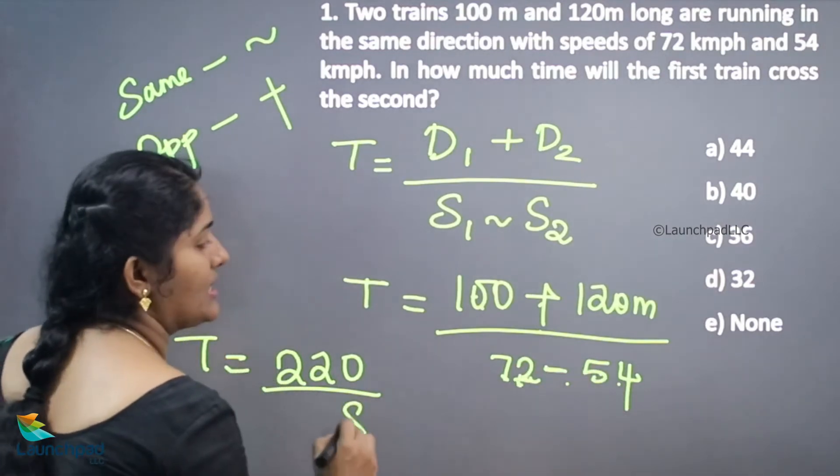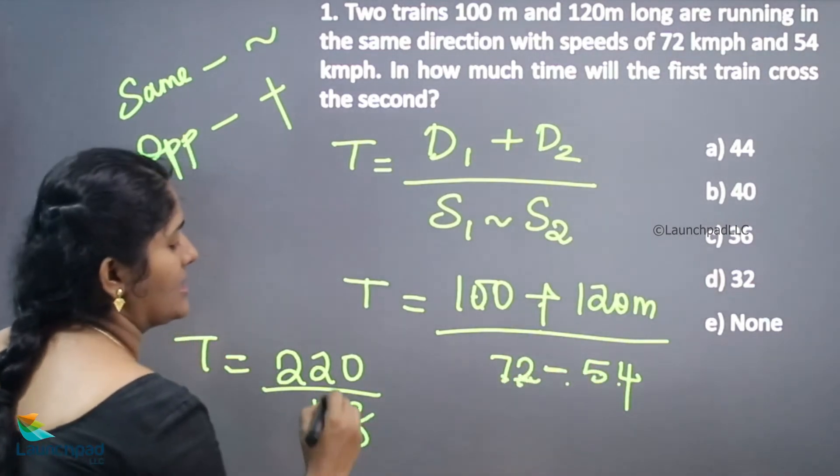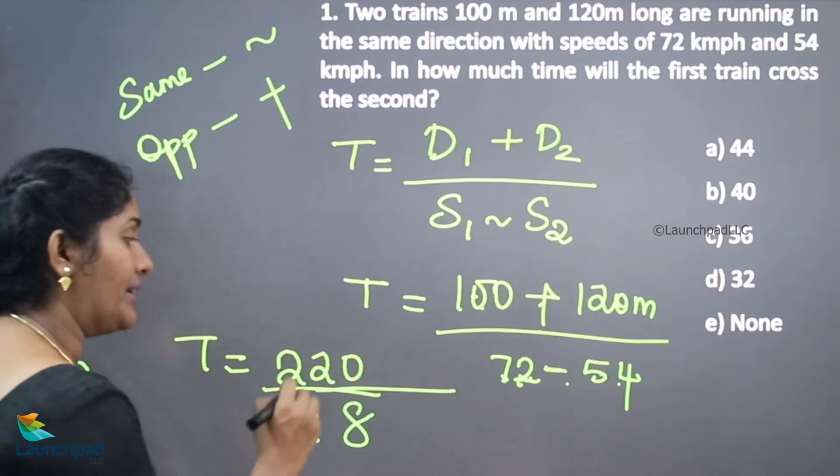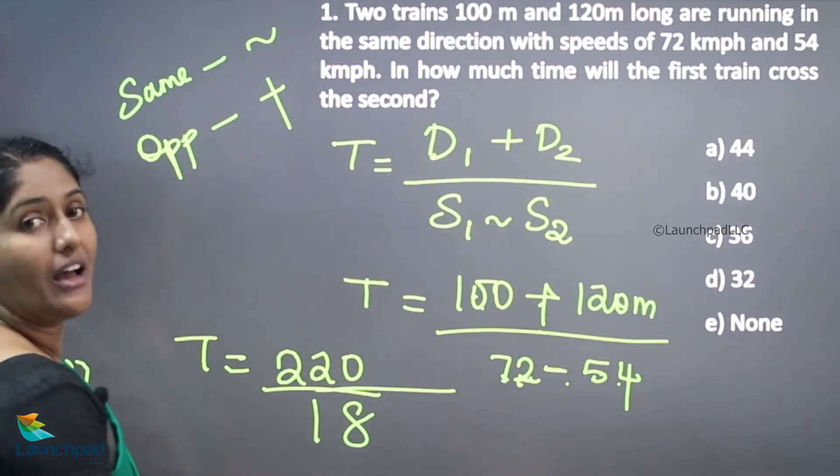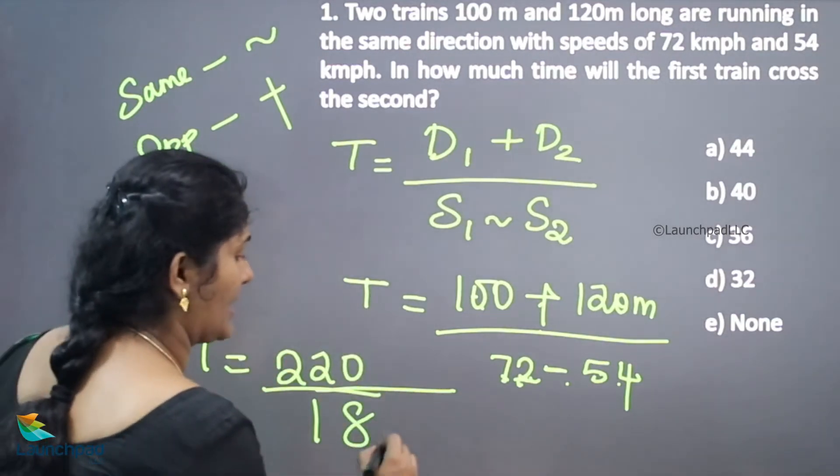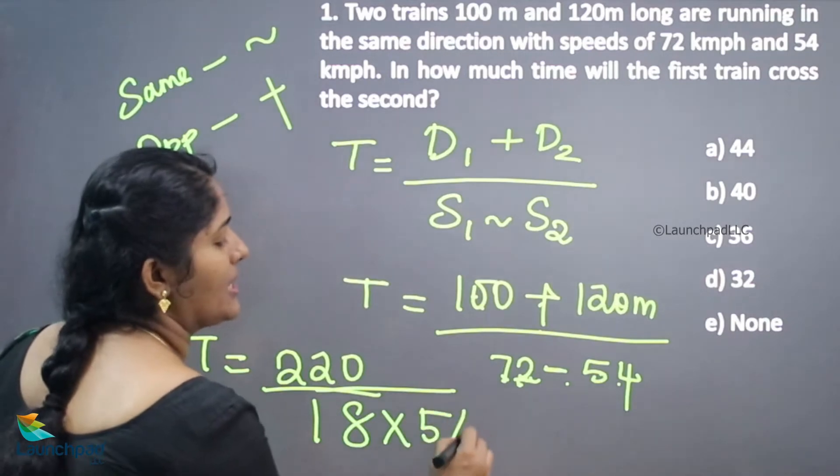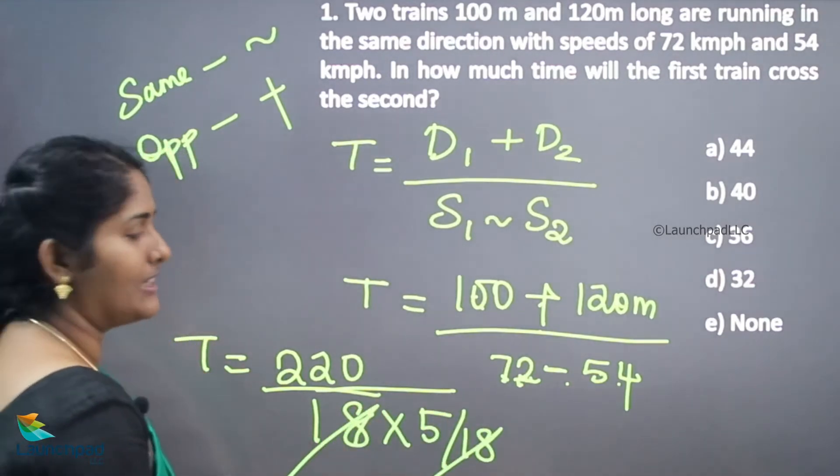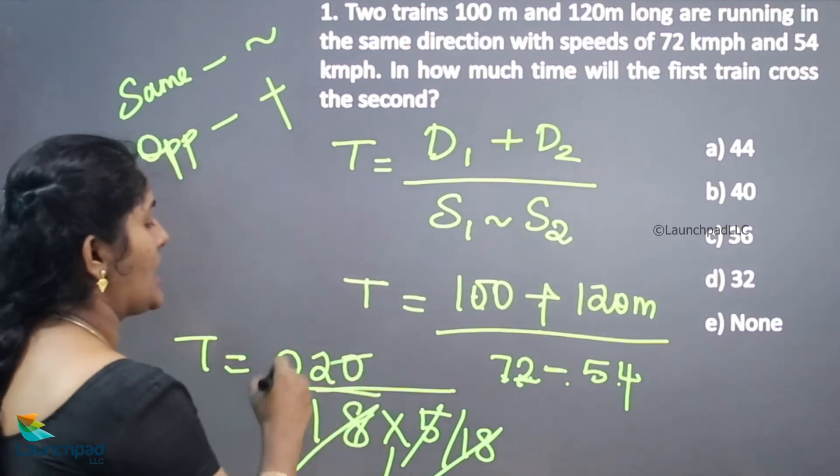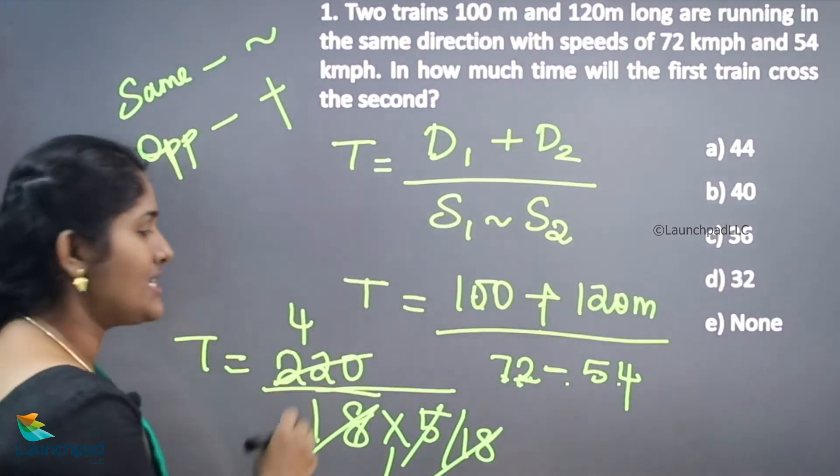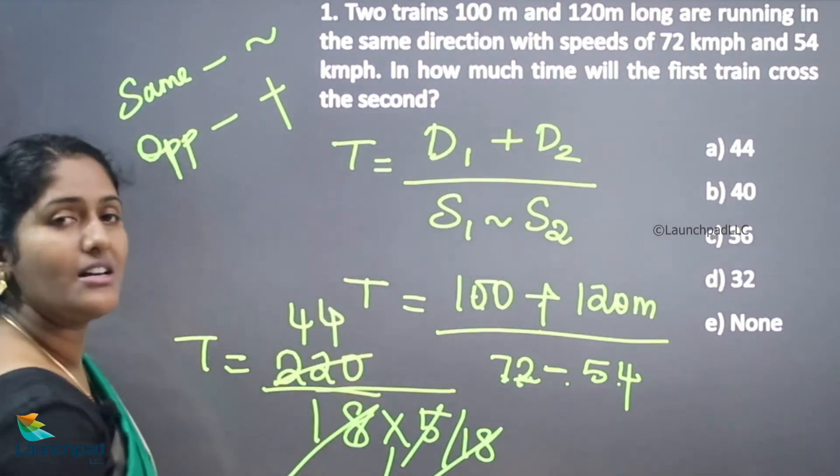12 minus 4 is 8, 6 minus 5 is 18. We need to convert this 18 kilometer per hour into meter per second, so 5 by 18. This 18, 18 will be cancelled. Now 1 5's are 5, 4 5's are 20, remainder 2, 4 5's are 20.